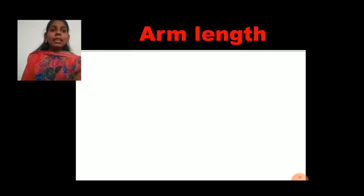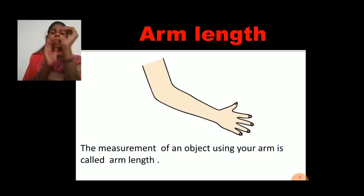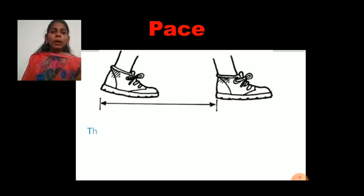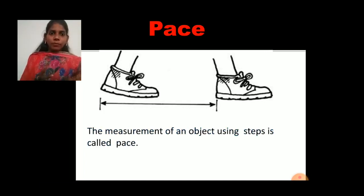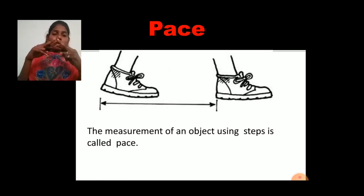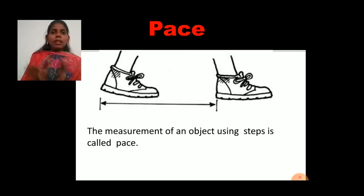The next part is arm length. The measurement of an object using your arm is called arm length. Next is pace. Pace is the measurement of an object using steps — it is like walking. When you are walking, one complete step using your two feet — that distance is called a step. The measurement of an object using steps is called pace. The normal walking distance is called pace.